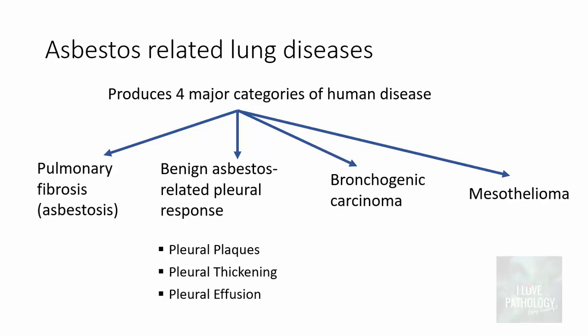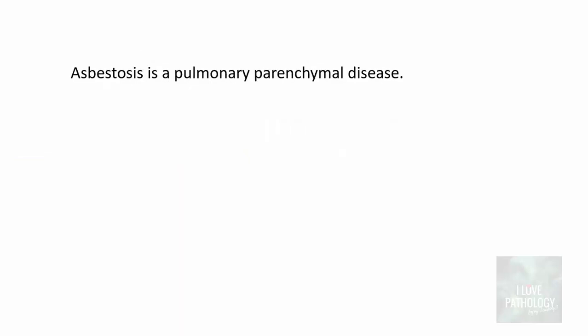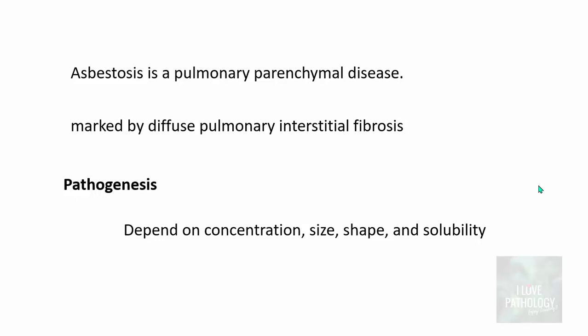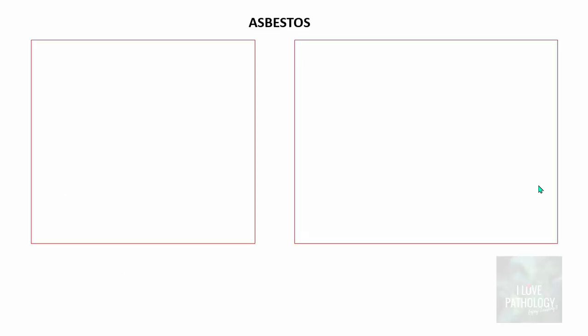Asbestosis is a pulmonary parenchymal disease marked by diffuse pulmonary interstitial fibrosis. In terms of pathogenesis, as discussed in the general aspects, it all depends upon the concentration, size, shape, and solubility of the material — in this case the different forms of asbestos.